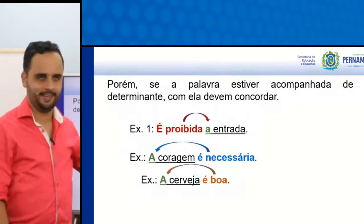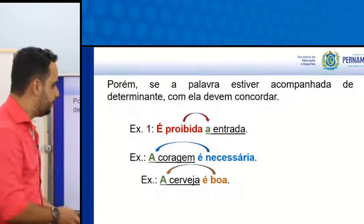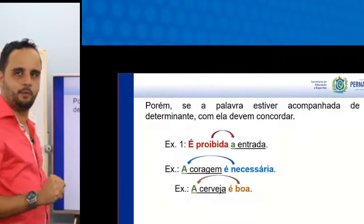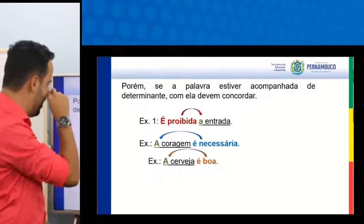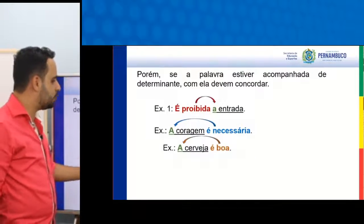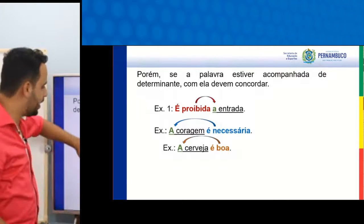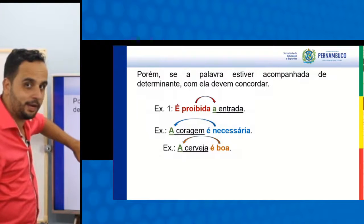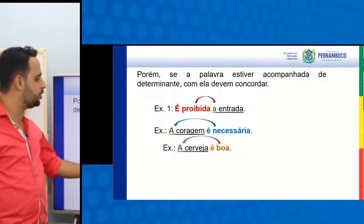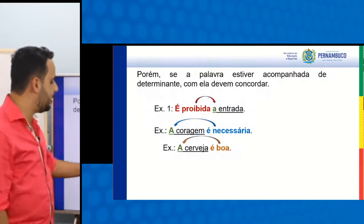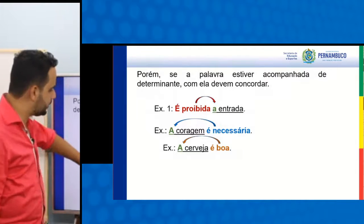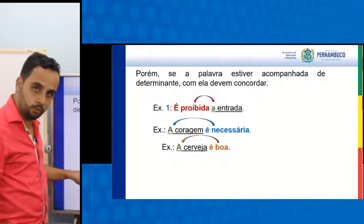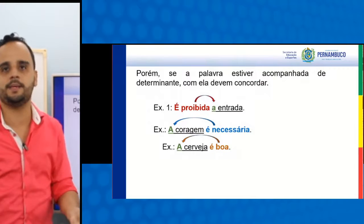É proibida a entrada. Perceberam? A entrada é proibida. Eu coloquei o artigo — automaticamente a palavrinha muda o seu gênero. É proibida a entrada. Segundo exemplo: a coragem é necessária. Se não tivesse o artigo 'a', seria: coragem é necessário — no seu sentido genérico. Coloquei o artigo: a coragem é necessária. Outro exemplo: a cerveja é boa. Se não tivesse o artigo: cerveja é bom. A partir do momento que eu acrescento o determinante, a concordância passa a ser com ele.